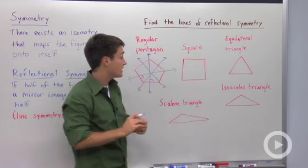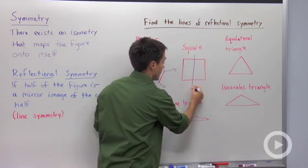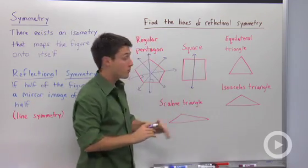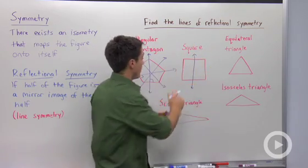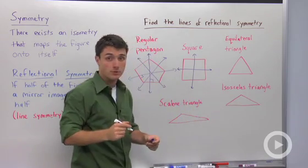If we move on to a square, I see that I could draw in a line of symmetry through the half of these two sides, and I could fold it. I could also draw a horizontal line of symmetry.